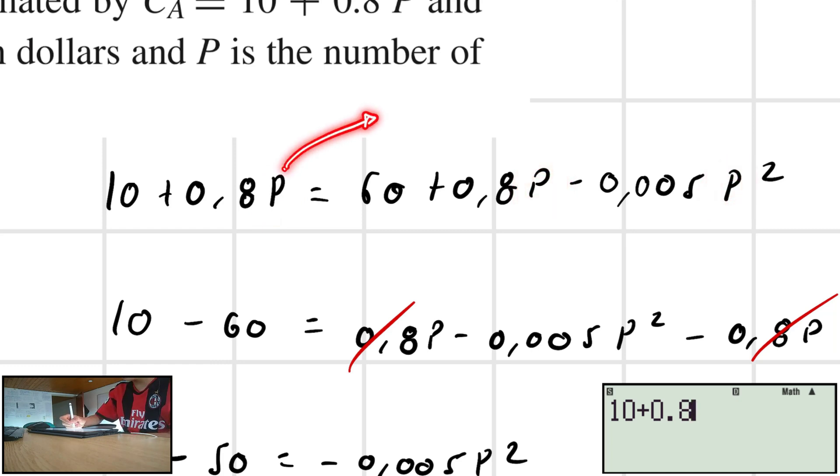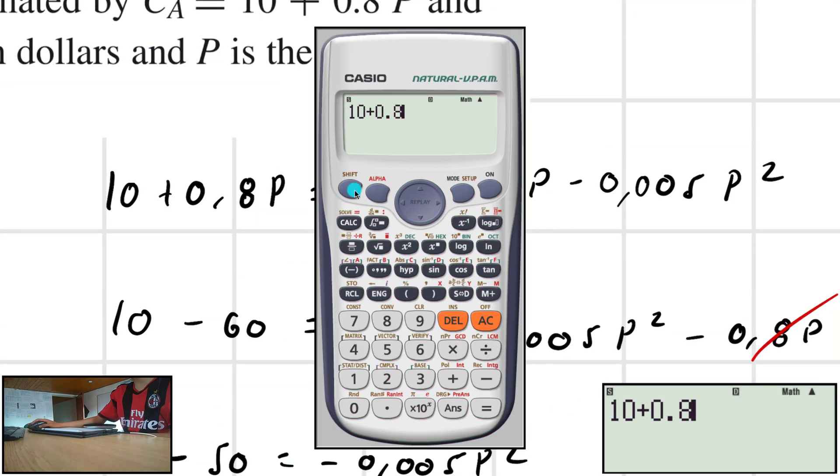And solve it for the incognita that you want. For example, I cannot create the same incognita right here because you have P, but I can call it, for example, X. So, 10 plus 0.8X is equal to 60 plus 0.8X, remember, minus 0.005X squared.